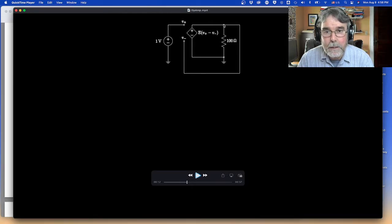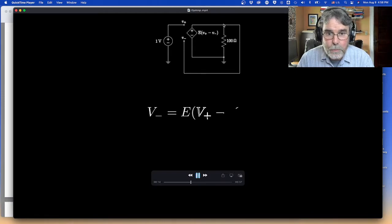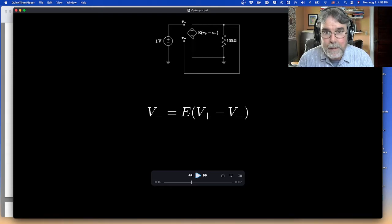And then what I want to do is calculate using the rules of this dependent source and the recipe here for calculating its output. Let's calculate the voltage here. So the idea is, of course, the recipe is that the output is E times the difference between the inputs. But the output, we're tying that to the minus input. So the minus input must be equal to E times the difference between the plus and the minus input. That's the idea.